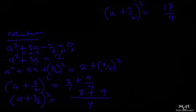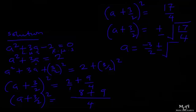That gives us a plus three over two, all squared, equal to 17 over 4. So a plus three over two equals plus or minus square root of 17 over 4. Moving the positive three over two to the right, it becomes negative three over two. Now, 17 does not have a perfect square root so it stays as root 17, and the square root of 4 is 2. The final answer is a equals minus three over two plus or minus root 17 over two.